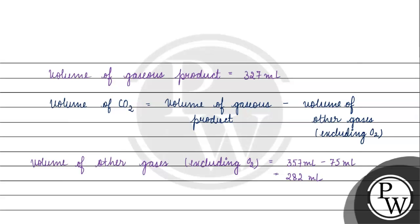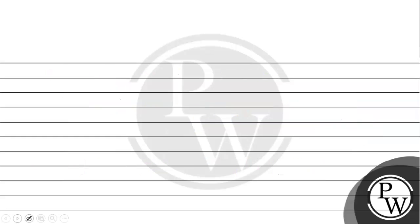Volume of air is equal to 357, then minus the volume of oxygen will be equal to volume of other gases. This will be 327 ml minus 282 ml, which will come out to be 45 ml.